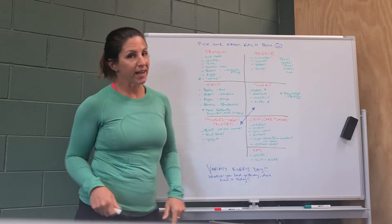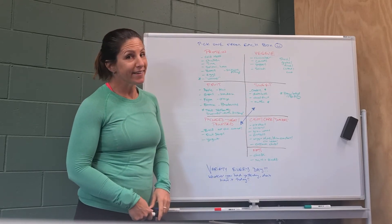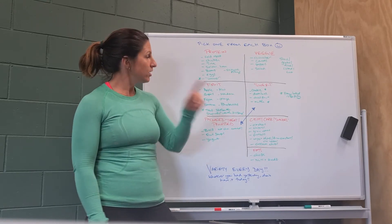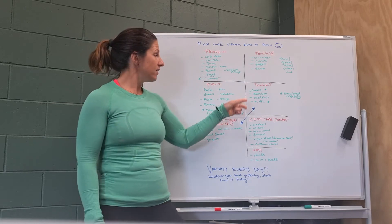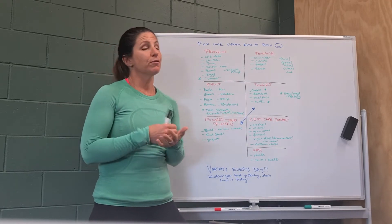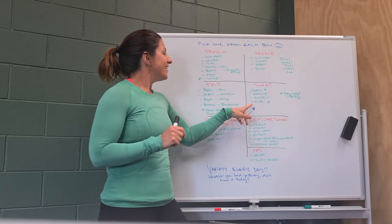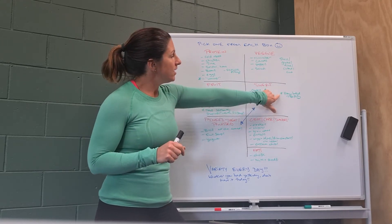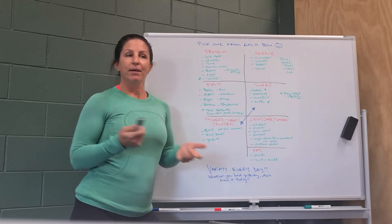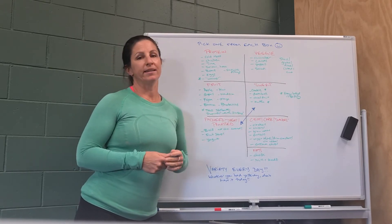Then the thing that everyone likes, the sweet treat. Think about one thing. So one cookie, could be a cookie, could be a couple of those little date balls that you can get, a little handful of dried fruit because dried fruit has a little sugar in it. Maybe a muffin and I put here homemade is best. So if you like to bake, bake yourself some muffins, bake yourself some cookies and add one in.